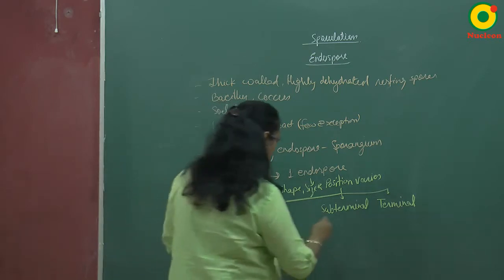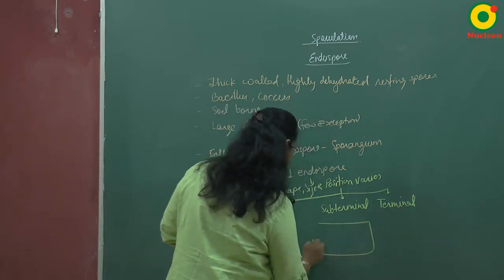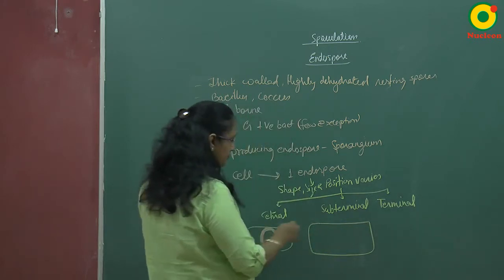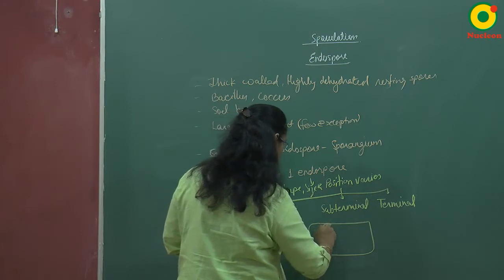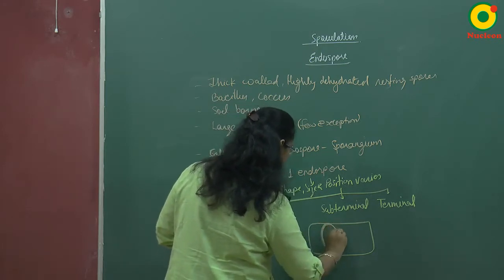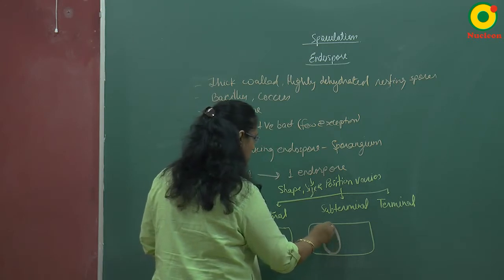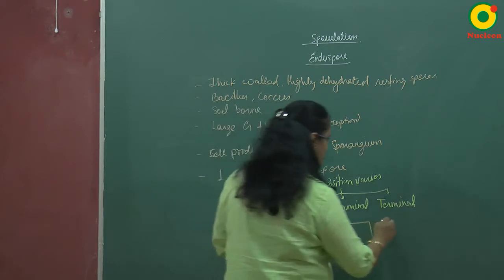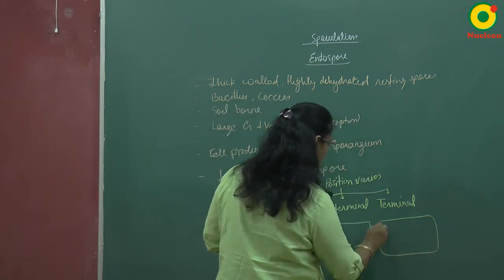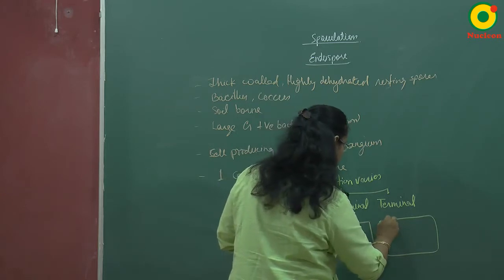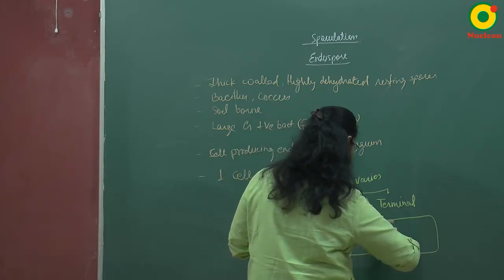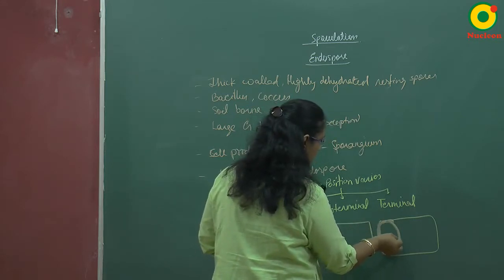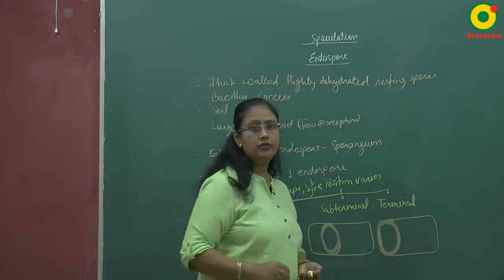In the sub-terminal type of bacterial cell, the spore is present slightly away from the center towards the terminal region — this is the sub-terminal position of the endospore. In the third type, the terminal endospore, the endospore is present on the terminal region of the cell.